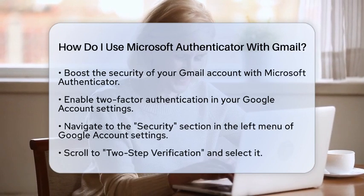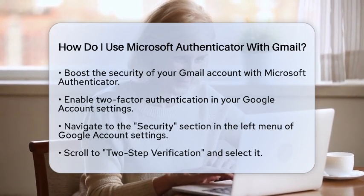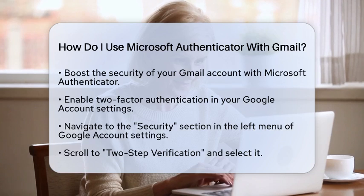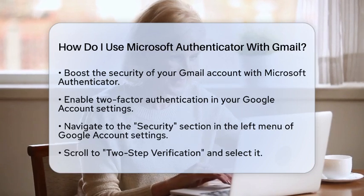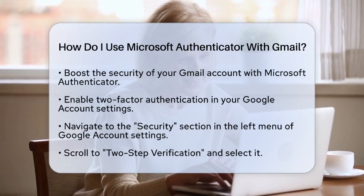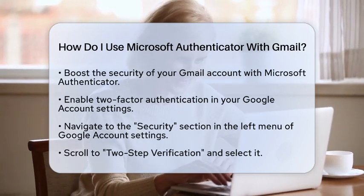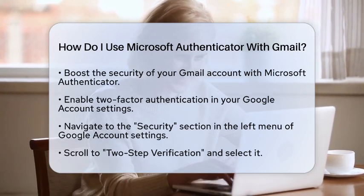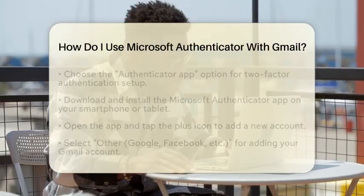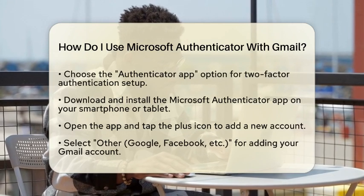Start by going to your Google account settings. Once there, click on the Security option found in the left menu. Scroll down until you see Two-Step Verification and click on it. You will find options for setting up two-factor authentication. Choose the option for Authenticator App.